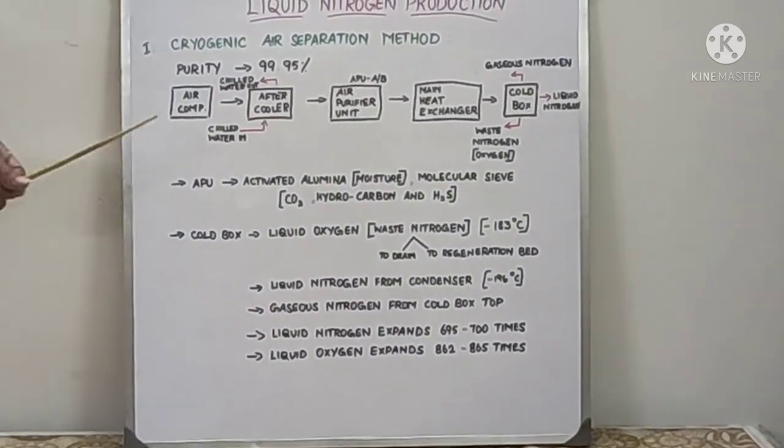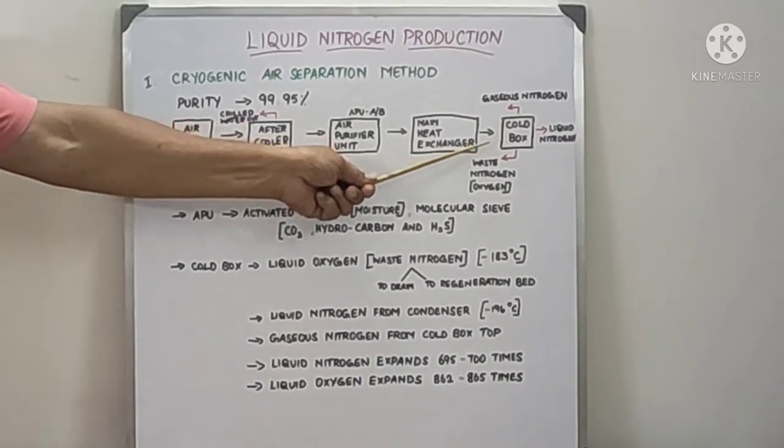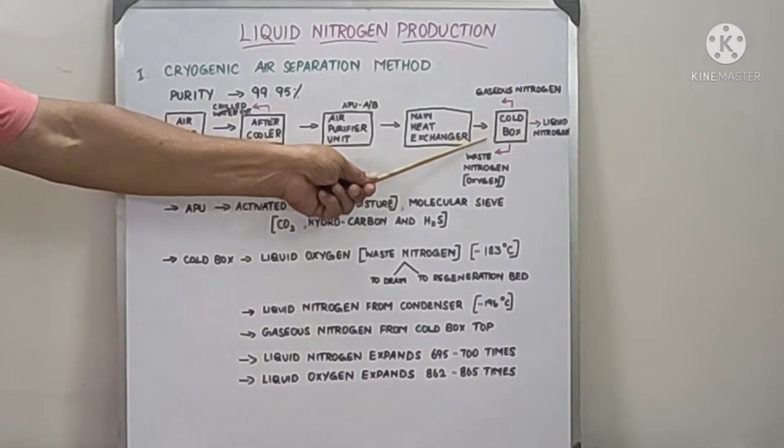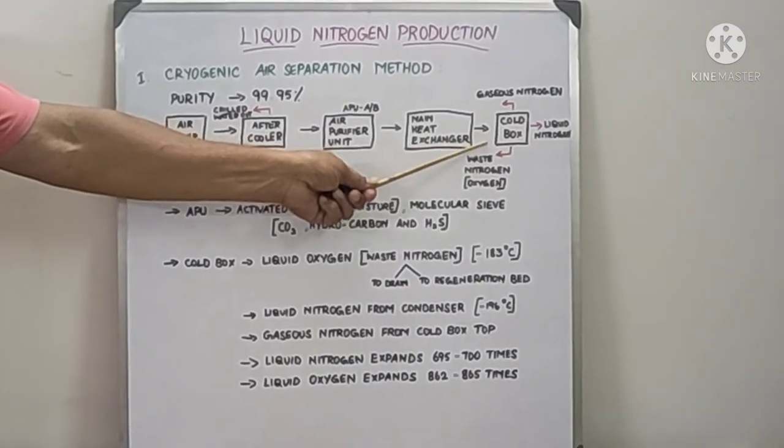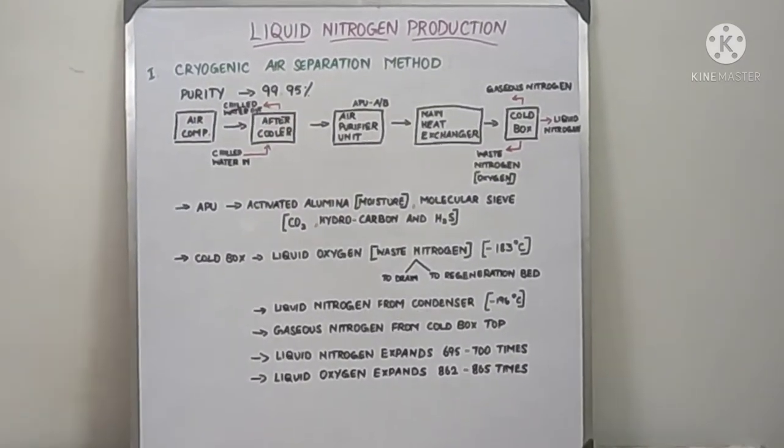In this plant, after the air compressor, there won't be any equipment run by motor. Only oil pump will be there, which is used to regulate the pressure of the cold booster and the cold expander. The cold expander turbine plays a vital role.